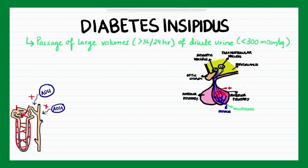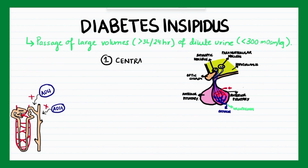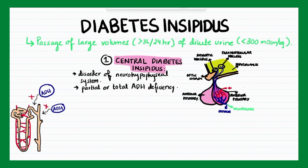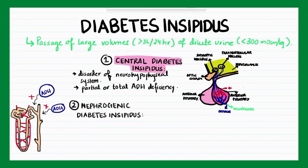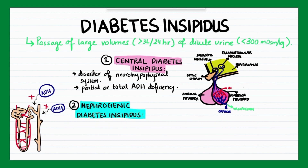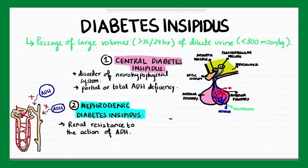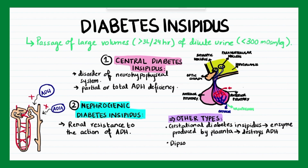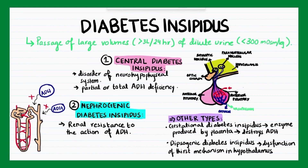There are various forms of diabetes insipidus, but the two major forms are central and nephrogenic diabetes insipidus. Central diabetes insipidus is a disorder of the neurohypophysial system which results in partial or total antidiuretic hormone deficiency. Nephrogenic diabetes insipidus occurs as a result of renal resistance to the action of antidiuretic hormone. Other types include gestational diabetes insipidus, which occurs in pregnancy due to an enzyme produced by the placenta that destroys antidiuretic hormone, and dipsogenic diabetes insipidus, which occurs due to a dysfunction of the thirst mechanism in the hypothalamus.